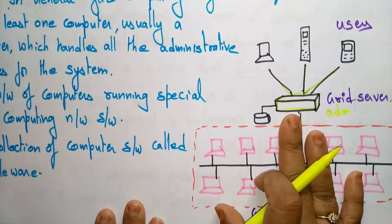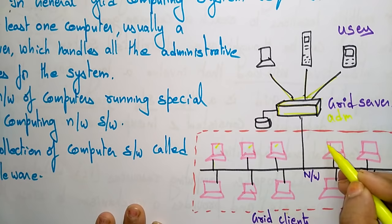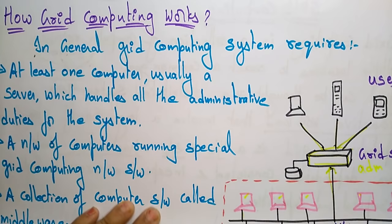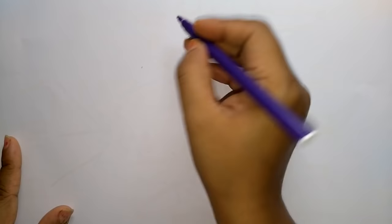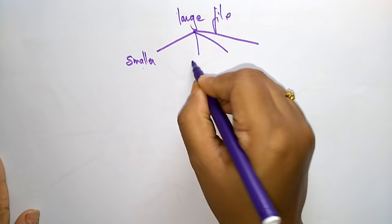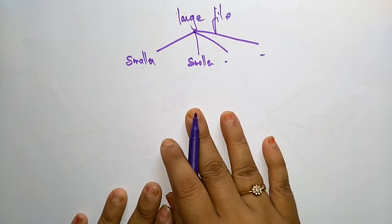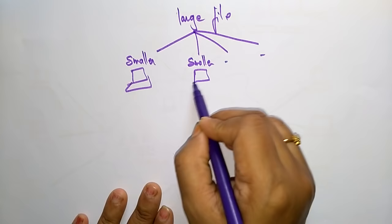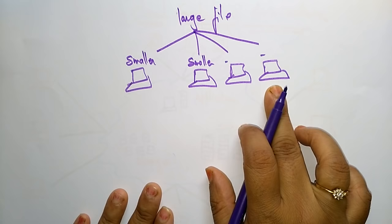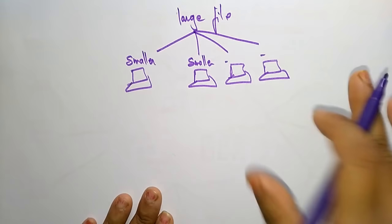The workload is divided among different systems to achieve one common goal, and one system does not interact with another. Each computing task is broken down into smaller pieces and distributed throughout the available computing resources for execution.